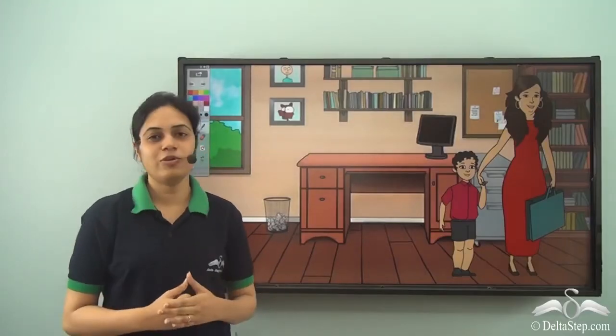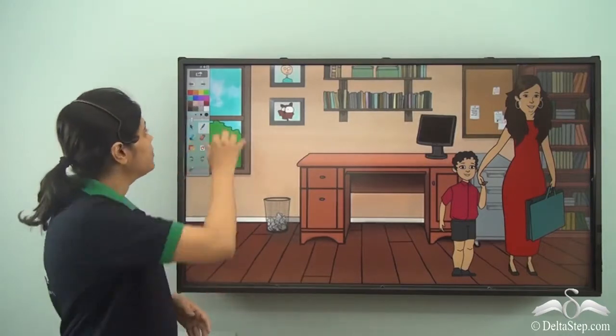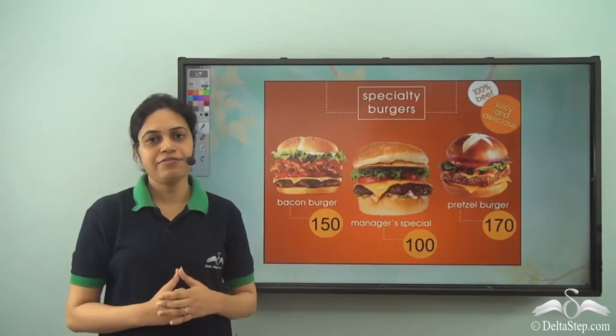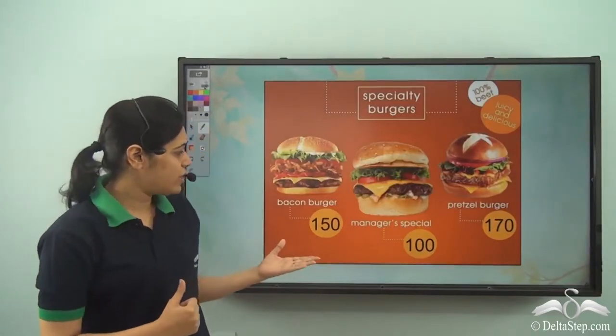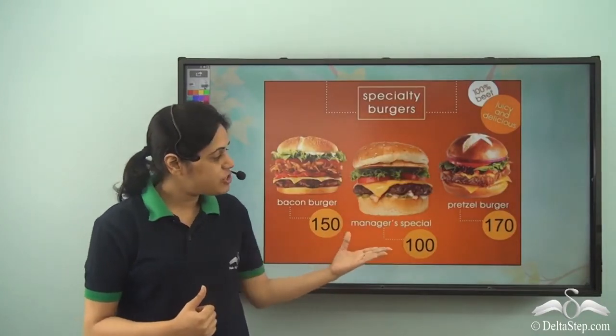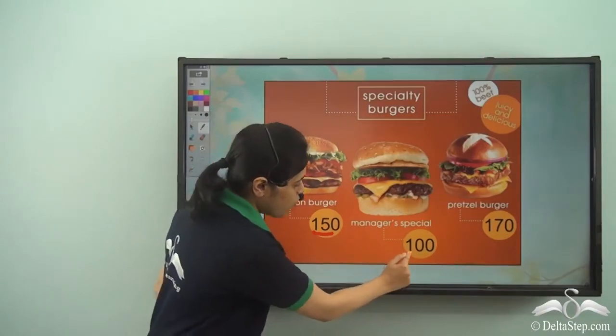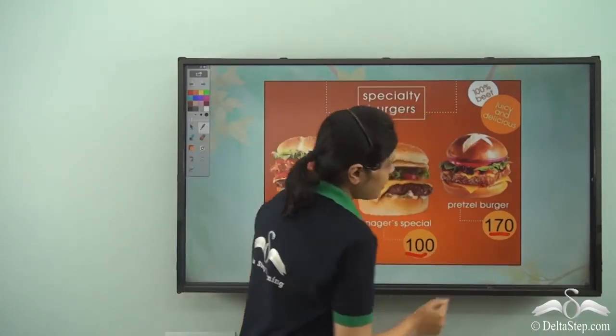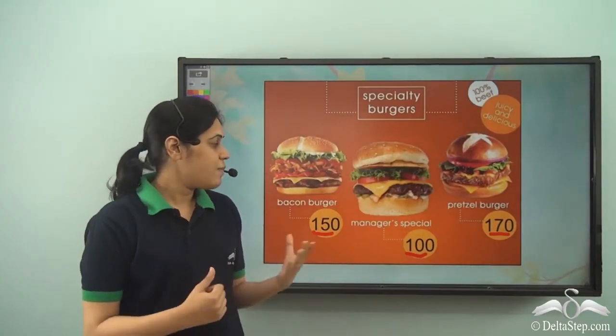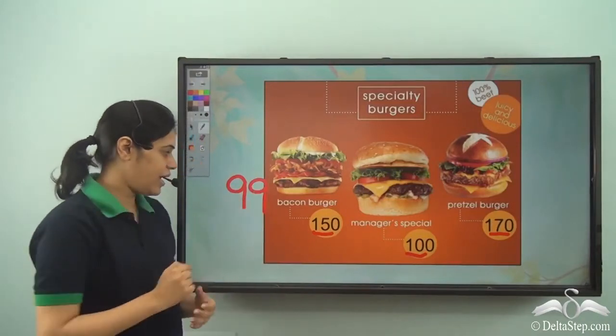Rohit loves to go out with his mother. So one day while they went out, they entered a shop to have a burger and Rohit was surprised to see the menu card. The menu card mentioned the prices of the burgers as 150, 100 and 170.